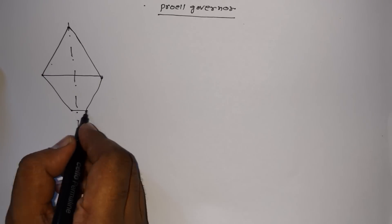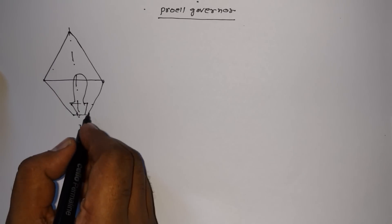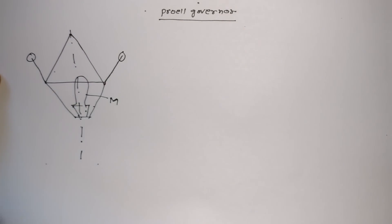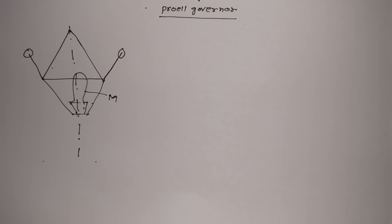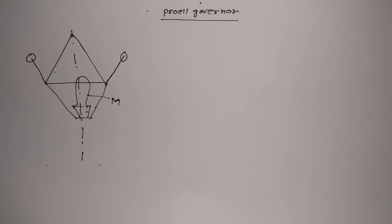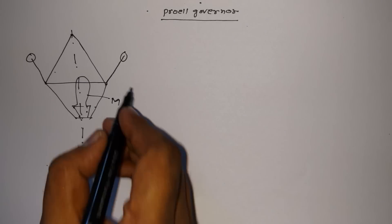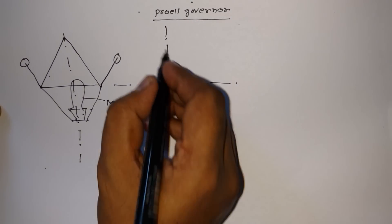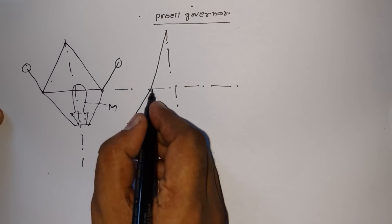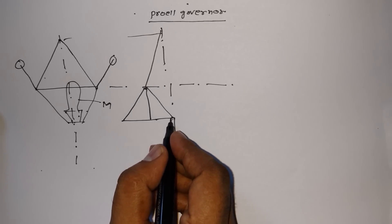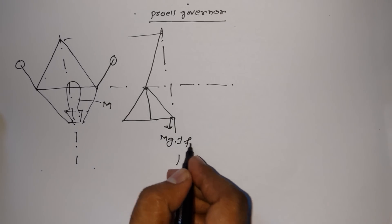This is a sleeve and the mass of the sleeve is M. Here is one arm and here is another arm. This is a Proell governor. Basically, if two ball masses are inclined like this, then the Porter governor becomes the Proell governor. Now let's draw another diagram so we can derive the equation. This diagram is also most important. So here we have the forces: mg plus or minus f, divided by 2.